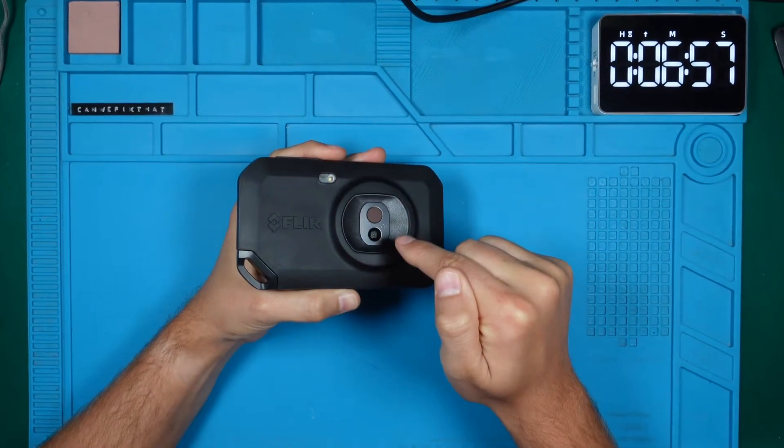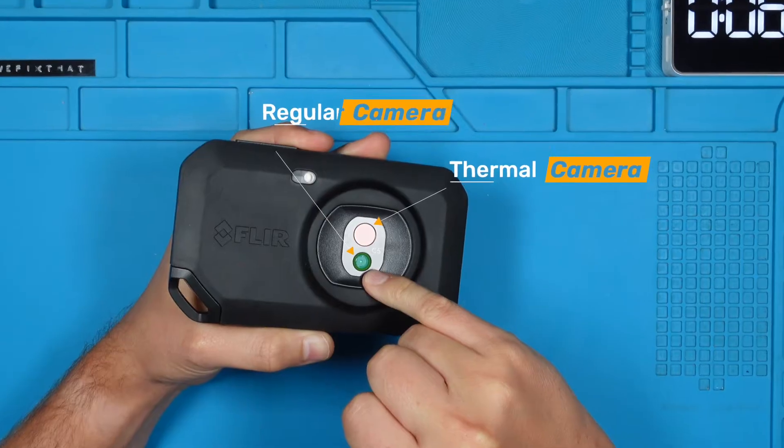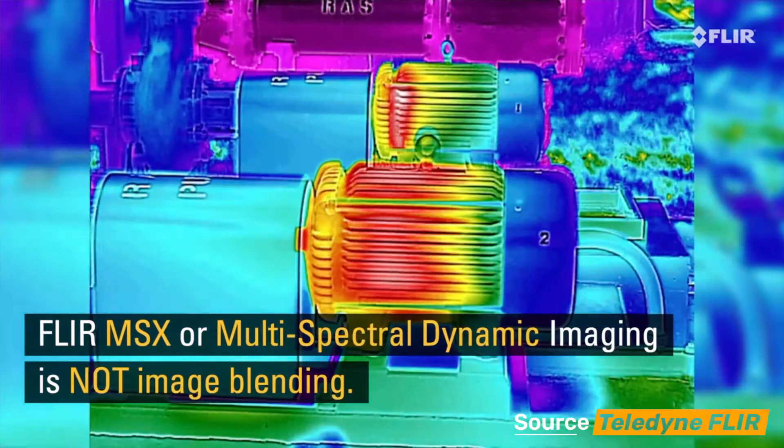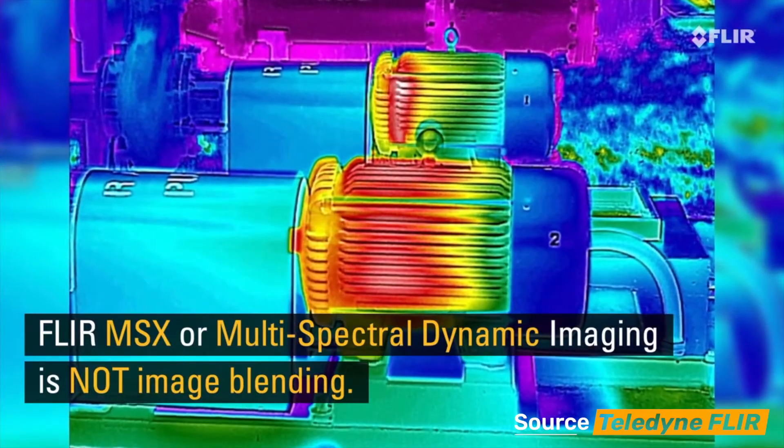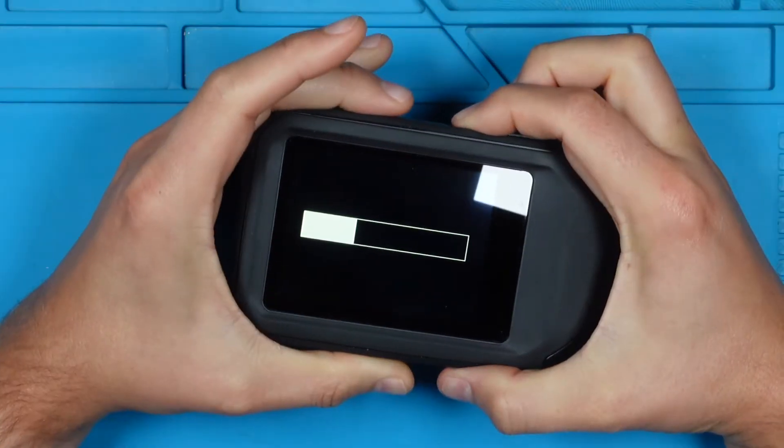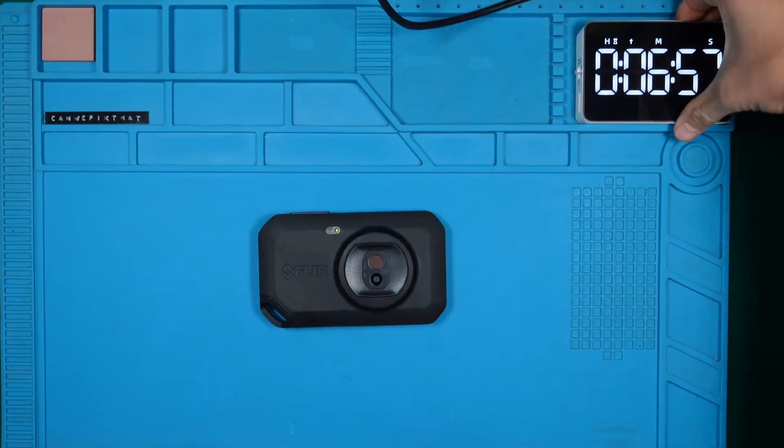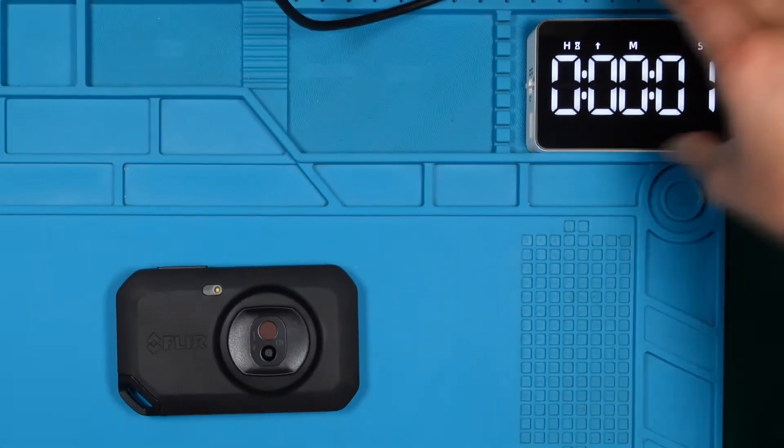Behind this small metal cover lie two cameras. The thermal one at the top and the regular one below. The regular camera plays a key role in the MSX mode, merging thermal details with its visuals to offer a richer viewing experience. Time to power down the camera.